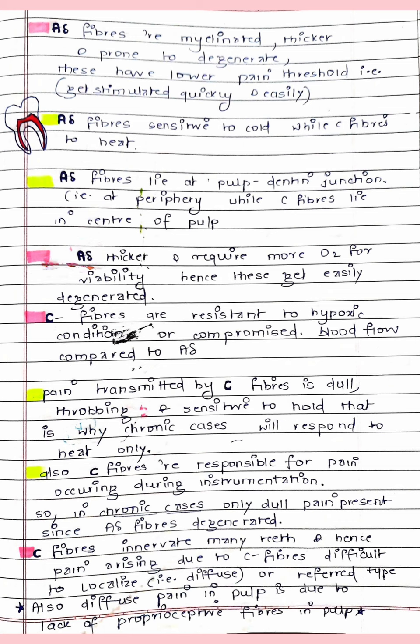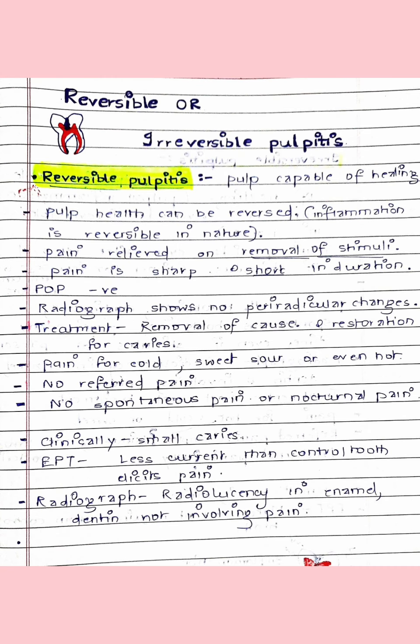In chronic cases, A-delta fibers have degenerated, and it is because of the C fibers that irreversible or chronic pulpitis cases are stimulated by heat. The pain transmitted by C fibers is dull, throbbing, and diffuse — that is why chronic cases respond to heat. C fibers are also responsible for pain during instrumentation. C fibers innervate many teeth, which is why it is difficult to localize the pain, and there is referred pain associated with C fibers.